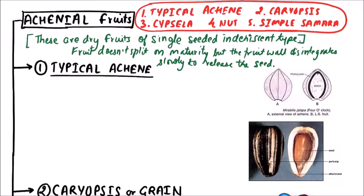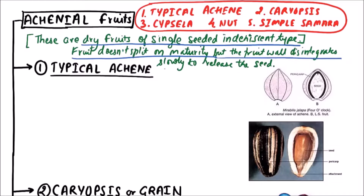Welcome to Studio Biology. In this video, we are going to discuss achenial fruits. Achenial fruits are single-seeded indehiscent type of fruits — dry fruits that don't split on maturity. The fruit wall disintegrates gradually or slowly to release the seed. The types are: typical achene, caryopsis, cypsela, nut, and simple samara.